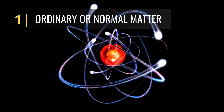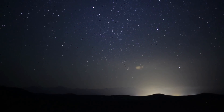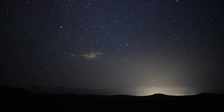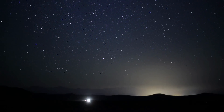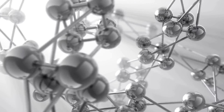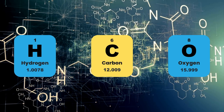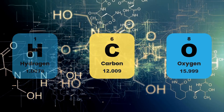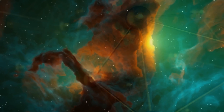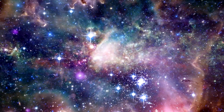One of the primary constituents of the universe is ordinary, or normal, matter. This is the stuff we encounter every day, from the rocks beneath our feet to the stars that light up the night sky. Ordinary matter is made up of atoms, molecules, and ions such as hydrogen, carbon, and oxygen. These building blocks come together to form everything we see and interact with, including the various celestial bodies in the cosmos.